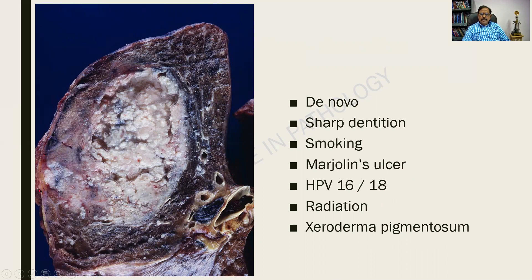This is a specimen of the lung — a cut surface showing a large tumor. The tumor is large and ovoid, grayish white in color, and it is friable. I can appreciate it even in the picture. The moment we start meddling with it, parts of it will come off — that is why we call it friable.